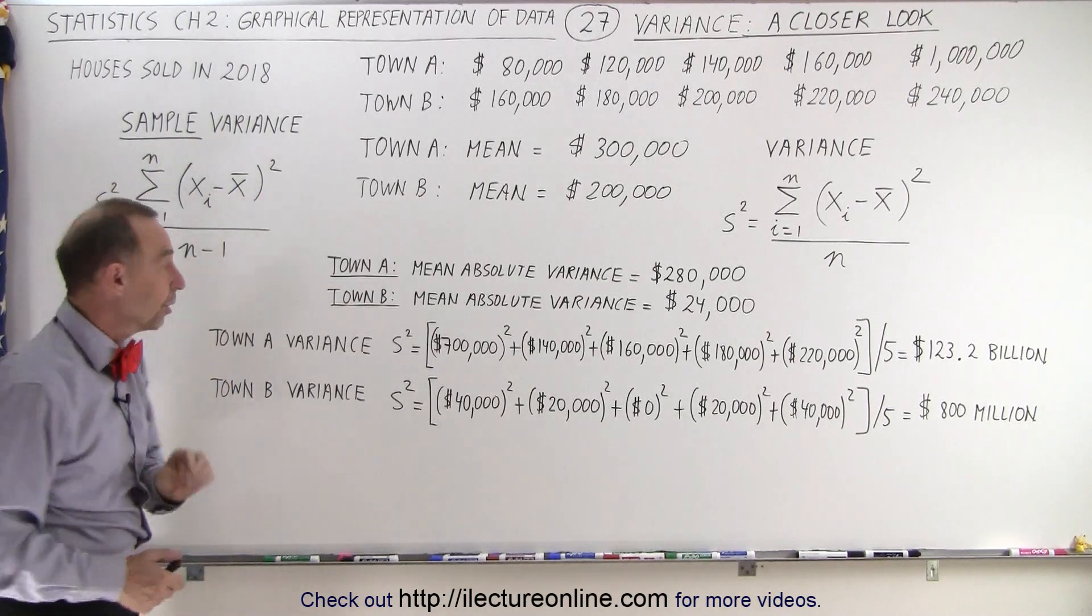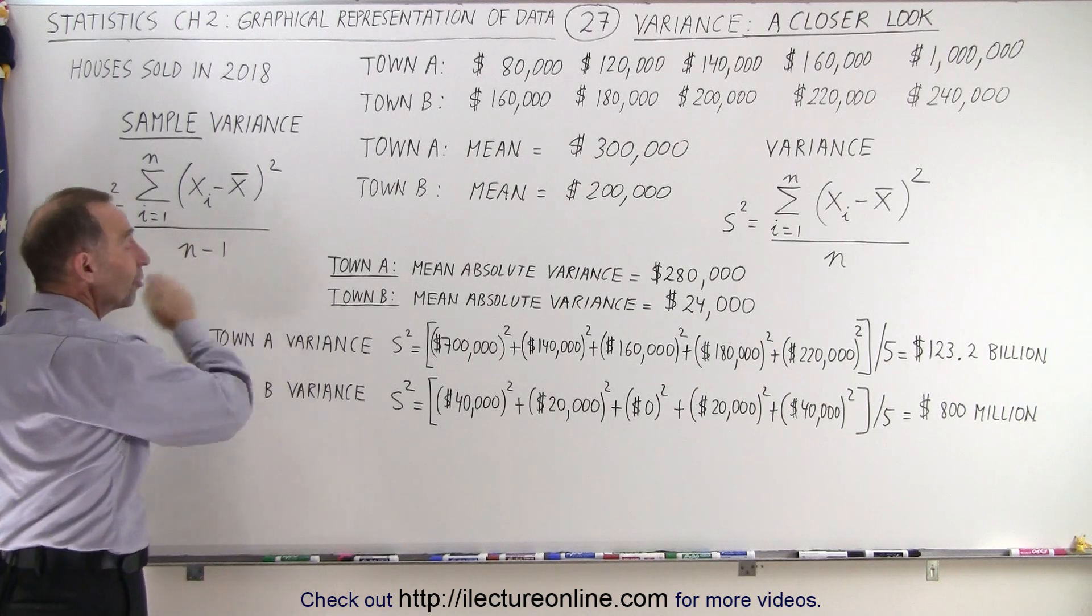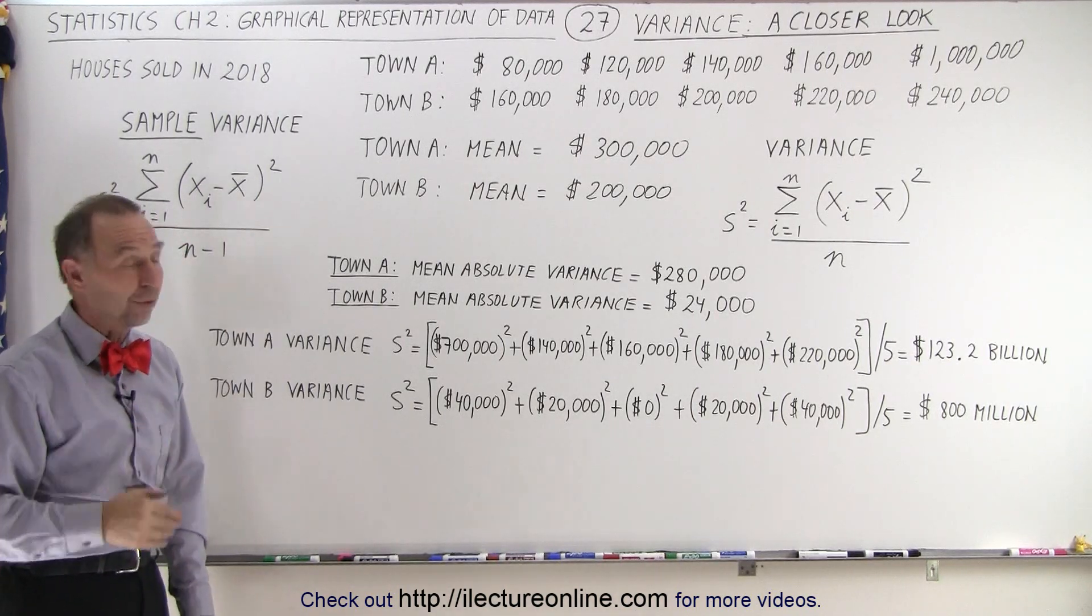If n is a small number, let's say five, five minus one is four and there's a big difference between dividing by five or dividing by four.